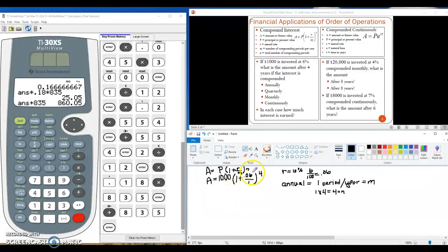So order of operations says inside parentheses, inside the parentheses we're going to deal with division before we do the addition. Then next in order of operations is exponents, and then finally multiplication. So we're going to go to our calculator to do all this.